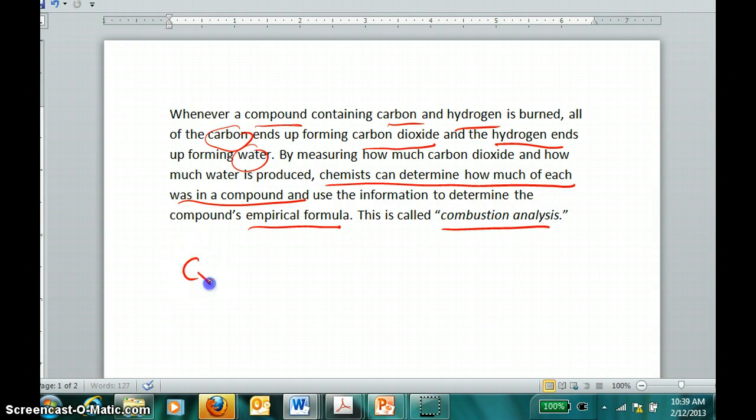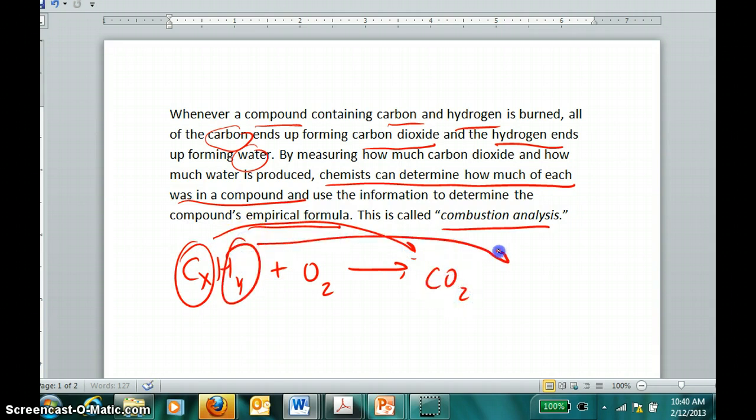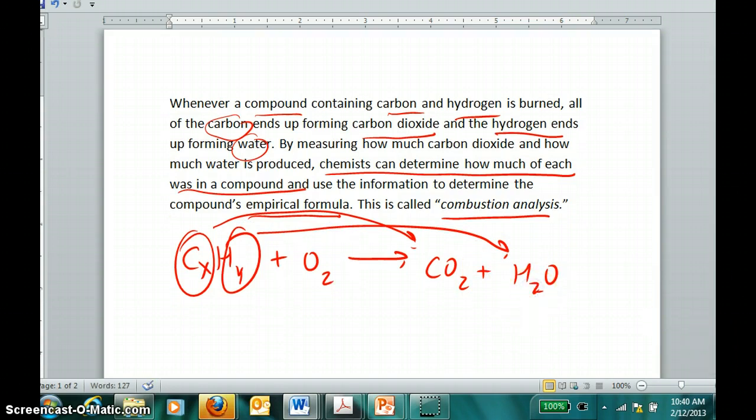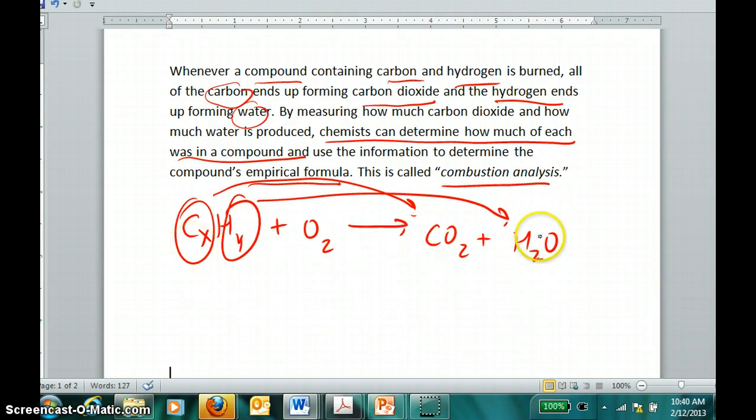To summarize, if I have a compound with carbon and hydrogen, and it can have other elements too, if you react it with oxygen, all of the carbon ends up as CO2 and all of the hydrogen ends up as water. Why can we figure out how much carbon was in the compound and how much water was?